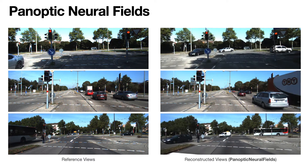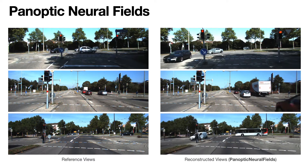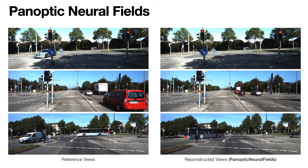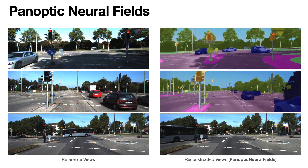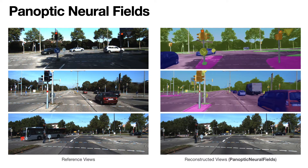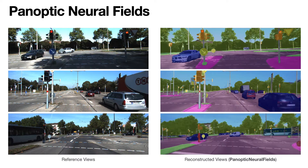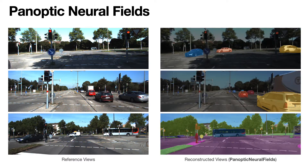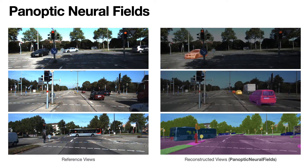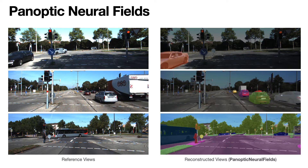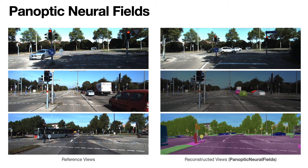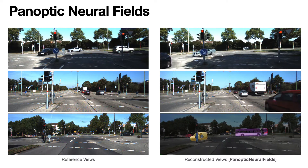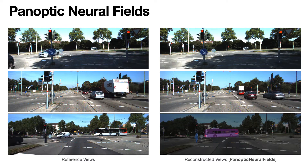In our Panoptic Neural Field representation, the scene is decomposed into amorphous background known as stuff, and countable object instances known as things. Each object instance and the stuff background is represented by their own neural function describing its 3D shape, pose, appearance, and semantics. Together they provide a holistic understanding of the scene.